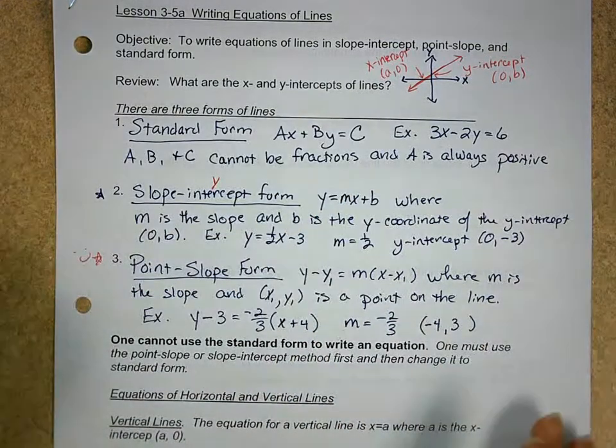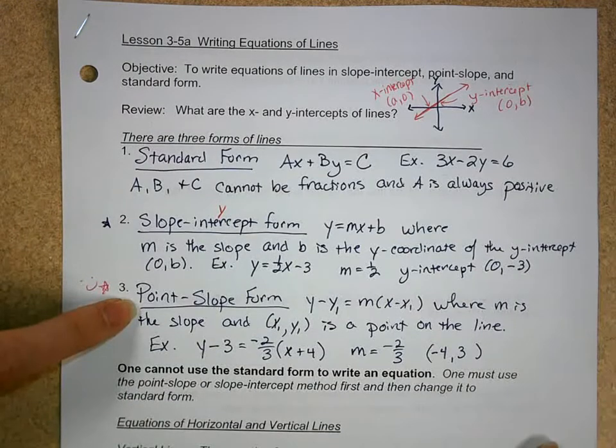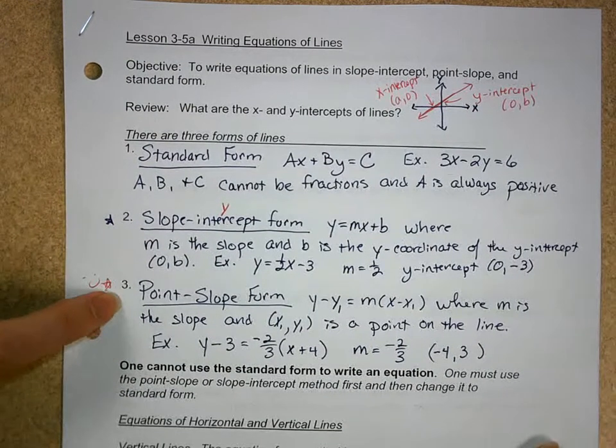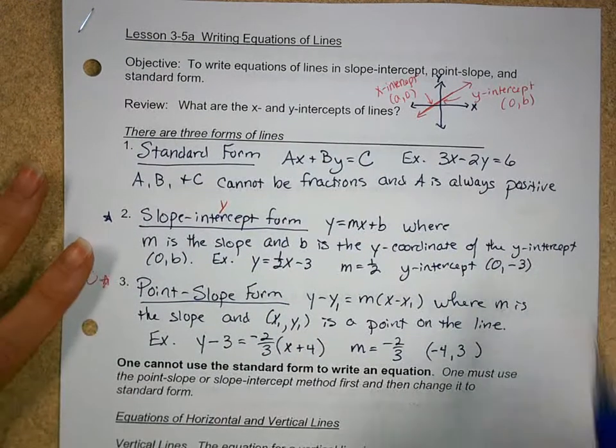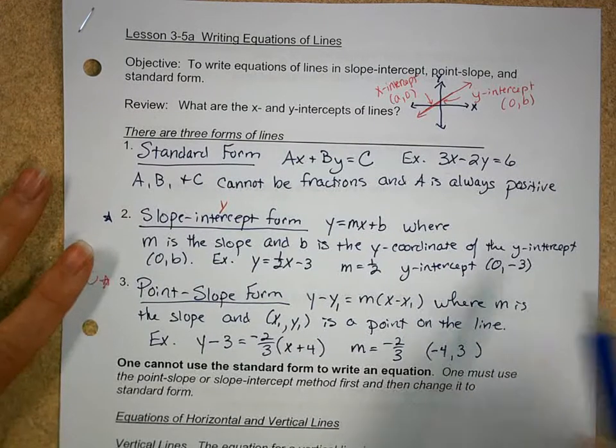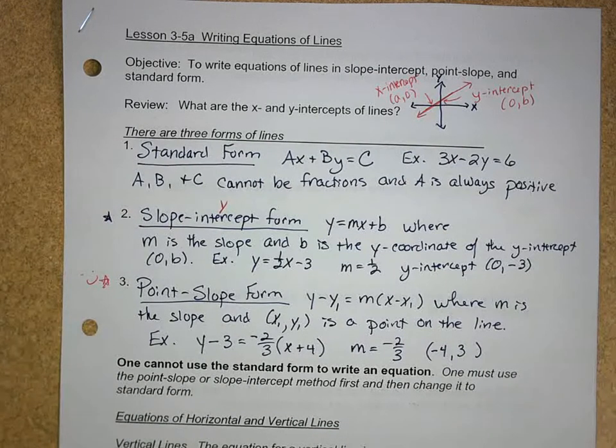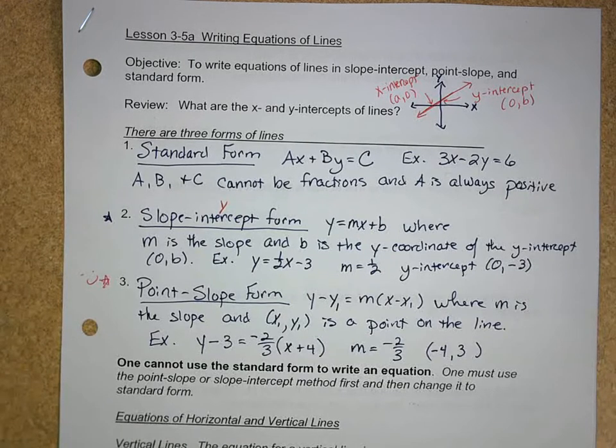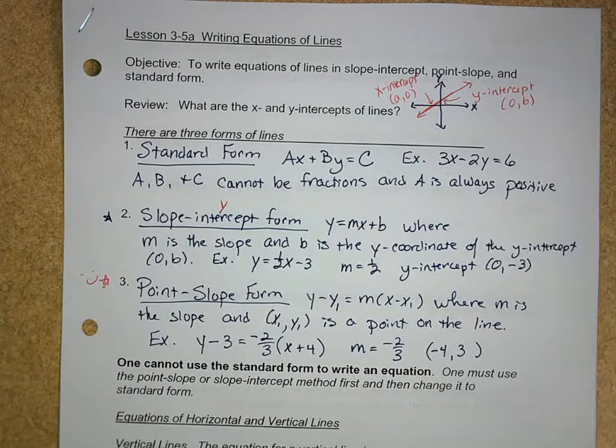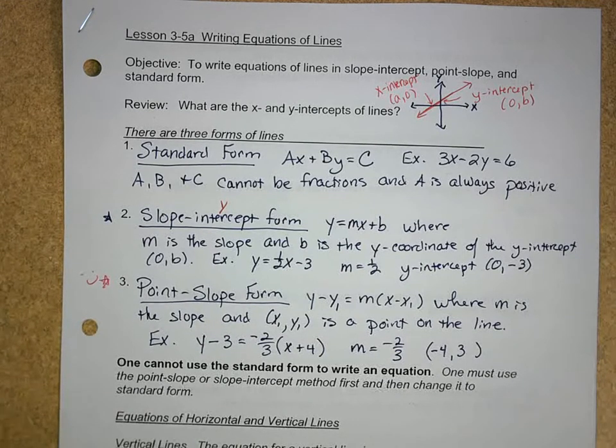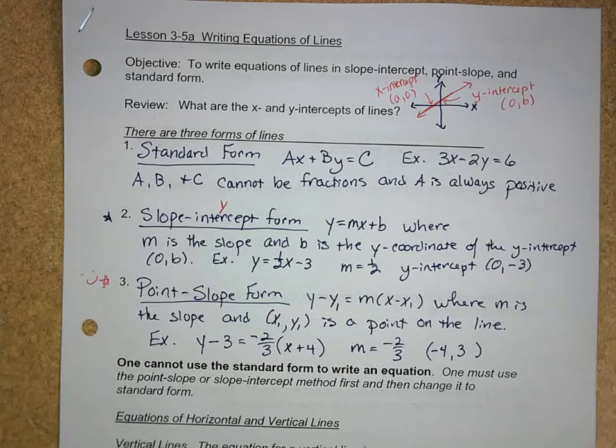Now, when do I use these? Well, point-slope form works no matter what because you just need a point and a slope. You can use it in place of the slope-intercept form because the y-intercept is still a point. We can always use it. Now, one thing you need to remember. You will never use the standard form to write an equation of a line. Ever. You will always use slope-intercept or point-slope first. Then you have to change it.